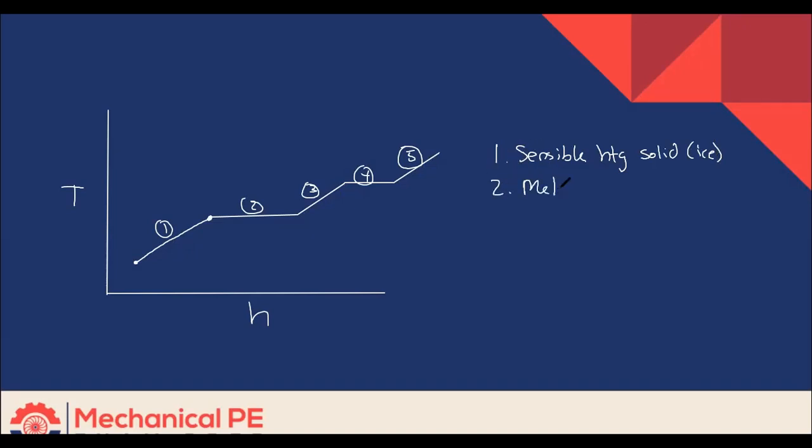And if we were going the other direction, obviously it would be freezing, right? Process three is sensible heating of a liquid. Four is evaporation or boiling. However you'd like to think about that. And five is sensible heating of a vapor steam.